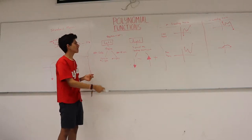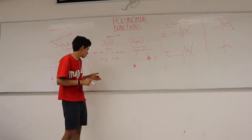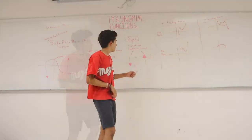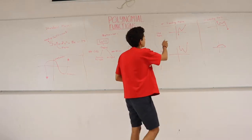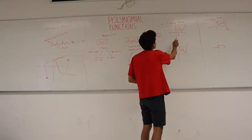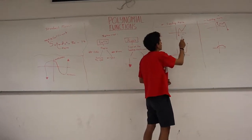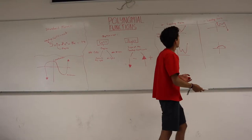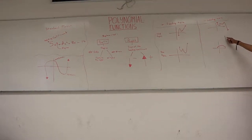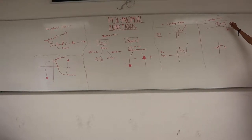We first need to understand how the right arm moves to then determine how the left arm moves. Here we can see examples of what we just discussed. In this polynomial function, we can see that the leading term is positive but it has an odd degree, which means the right arm goes up and the left arm goes down. In this polynomial function, since the leading term is negative but it has an odd degree, the left arm goes up and the right arm goes down.